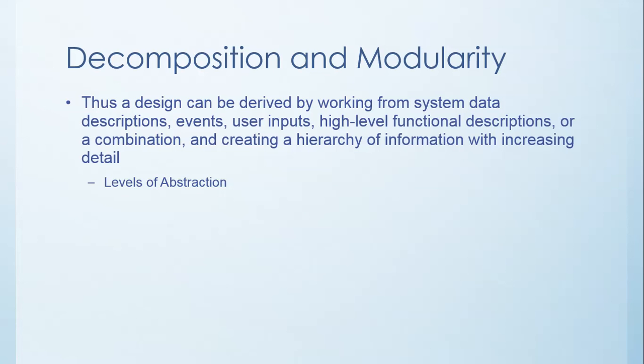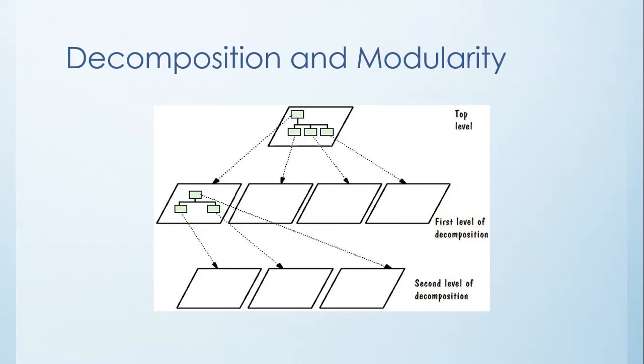What that means is you would have started with the generic system component at the start. You would have probably broken that down using one of the five techniques that we just described into some set of sub-components, and then you would pick each one of those sub-components in turn and break that down even further into another level of decomposition.